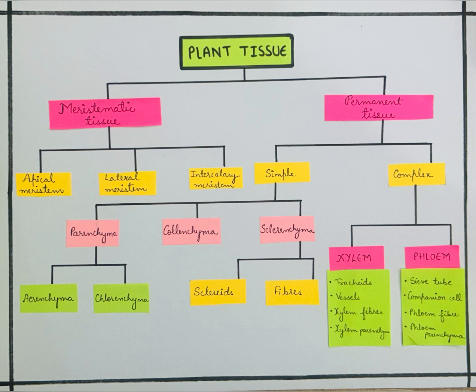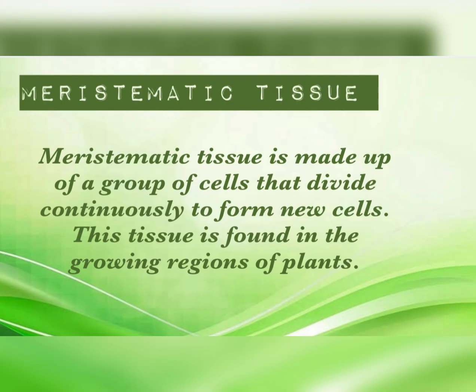Simple tissue is divided into three types: parenchyma, colenchyma, and sclerenchyma. Parenchyma has two modifications: aerenchyma and chlorenchyma. Sclerenchyma is of two types: sclereids and fibers. Complex tissue consists of vascular tissues which are xylem and phloem.